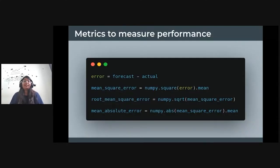So the metrics to measure the performance. There are various metrics, error which is forecast minus actual, your mean square error, your root mean square error, and your mean absolute error. We will be using RMSE. RMSE is a quadratic scoring rule that also measures average magnitude of the error. It's a square root of average of square differences between prediction and actual forecast.